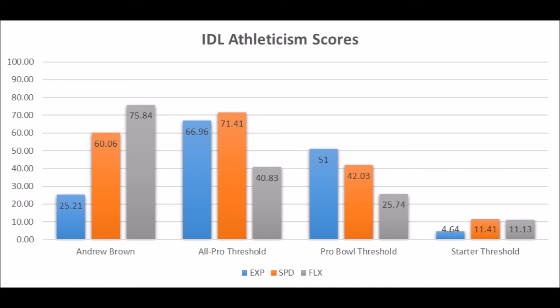Andrew Brown looks like a pretty decent candidate to be a 3-4 DN — not an elite one, not a multiple Pro Bowl or multiple All-Pro type, but definitely someone I think can become a long-term starter, and that's the best-case scenario for him. Based on both the production data and athleticism data, there's a very good chance he can become a starting 3-4 DN or starting defensive tackle, but the idea of him being a Pro Bowl or All-Pro type is very unlikely based on the overall data.